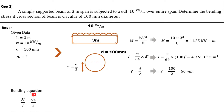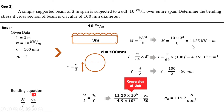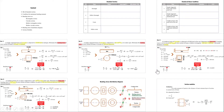With diameter 100 mm, y = d/2 = 50 mm. Converting 11.25 kN·m to 11.25 × 10⁶ N·mm and substituting into the bending equation, we get σ_b = 114.7 N/mm². Remember to balance units to get the correct value of σ_b.